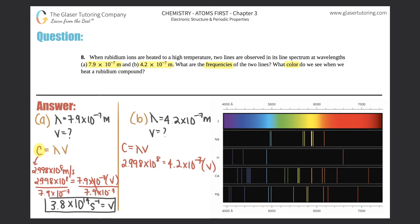...times the frequency. To solve for frequency, we'll divide by 4.2 × 10^-7 on both sides, and that will cancel.